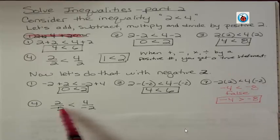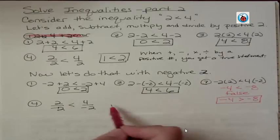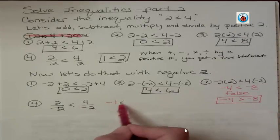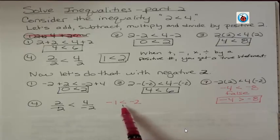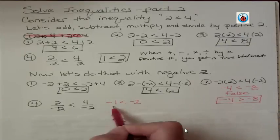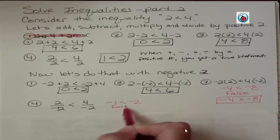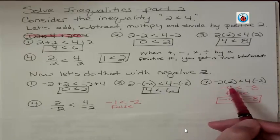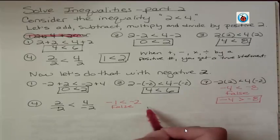Let's look at it with division. 2 divided by negative 2 is negative 1, and 4 divided by negative 2 is negative 2. But wait a second, negative 1 is not less than negative 2. Negative 2 is further to the left, so again, we get a false statement when we divide by a negative. We get a false statement when we multiply by a negative, and to make it true, we have to change that.